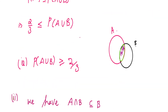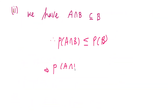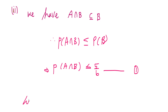Now, using the addition formula: P(A∪B) = P(A) + P(B) − P(A∩B). Since A∪B is contained in the sample space, P(A∪B) ≤ 1. We substitute this into the addition formula, giving P(A) + P(B) − P(A∩B) ≤ 1.